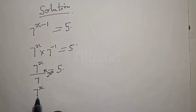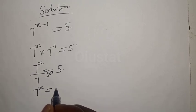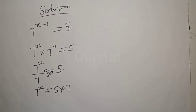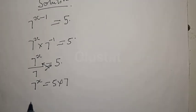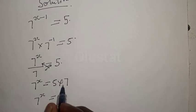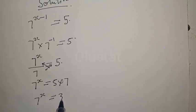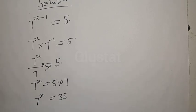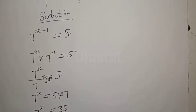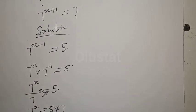Now let's cross multiply. That is: 7 raised to power x is equal to 5 times 7. Then we have 7 raised to power x is equal to 5 times 7, which is 35.